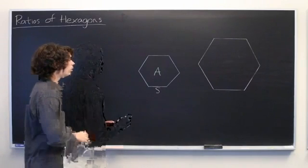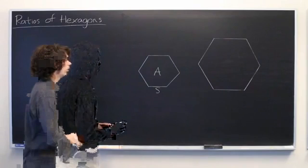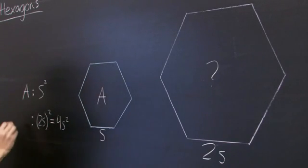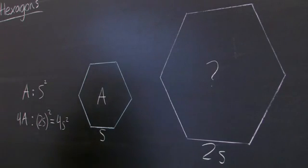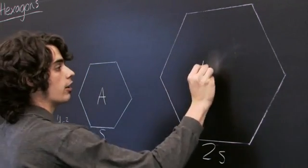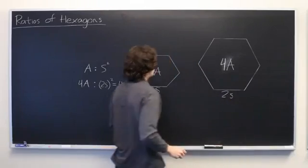Now the important thing to keep in mind is that it gives us two S squared, which gives us four S squared. So what that means is that when our side length doubles, our area increases by a factor of four. Simple enough?